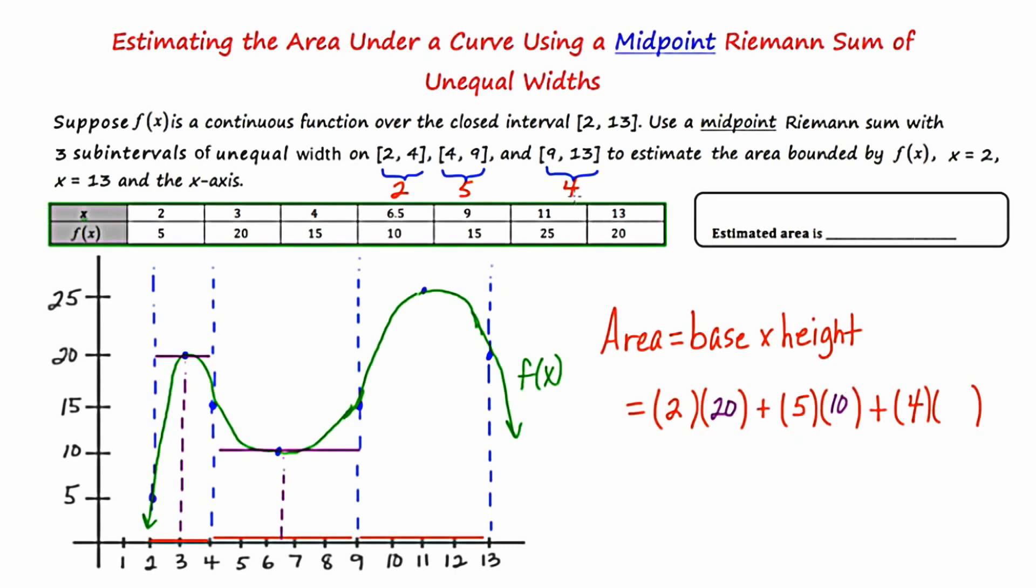Now the third rectangle has a width of 4. Half of 4 is 2. And if I move 2 units from either side of the endpoint, I end up at 11. So I'm going to cap this rectangle at 25.